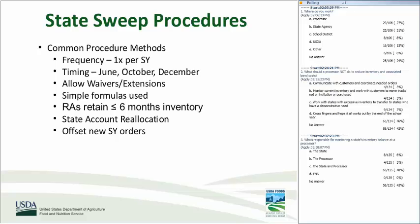Common practices across state agencies include: inventory sweeps done one time per school year, typically in June, October, or December; waivers or extensions allowed on excess inventory with an approved usage plan; simple formulas such as — a district received 10,000 pounds of beef, used 2,000 pounds, leaving 7,000 pounds calculated as excess and swept; and most states allow recipient agencies to retain pounds equal to 6 months or less for use in the new school year. Swept pounds are transferred to a state account and reallocated to recipient agencies or states that can use them timely, or used to offset next school year orders.